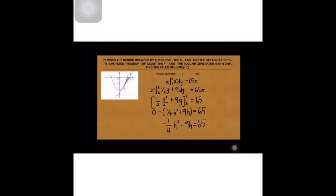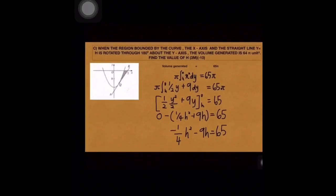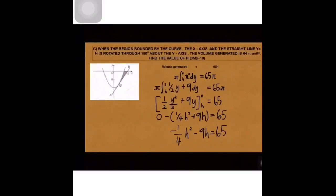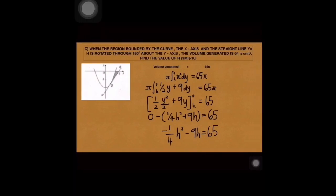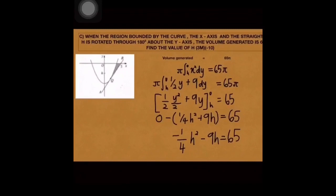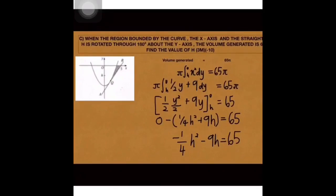Soalan yang terakhir, baca soalan dahulu. Dia bagi region bounded by curve X axis straight line Y. X rotated 180 about Y axis. Lepas tu, dia bagi volume generated is 64. Tapi sebenarnya 65, tapi kawan saya tertypo, maafkan kesalahan dia. Lepas tu dia suruh cari value of H. Macam mana nak cari value of H ni? Mula kita gariskan Y sama dengan H dahulu. Lepas tu kita tahu kawasan bounded by curve Y sama dengan H dengan X axis, itulah kawasan yang jadi volume tadi.